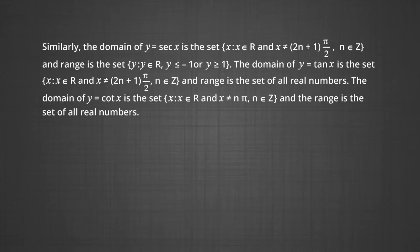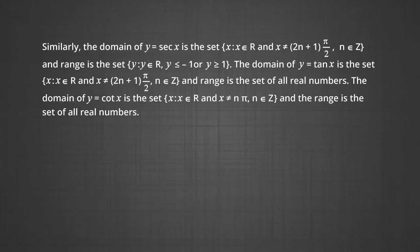The domain of y = tan x is the set of x such that x belongs to real numbers and x is not equal to (2n+1)π/2, where n belongs to integers, and the range is the set of all real numbers. The domain of y = cot x is the set of x such that x belongs to real numbers and x is not equal to nπ where n belongs to integers, and the range is the set of all real numbers.